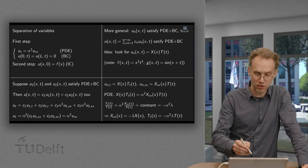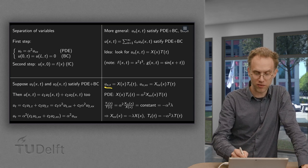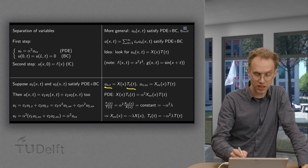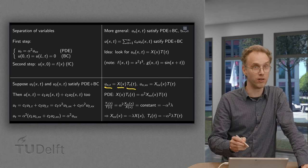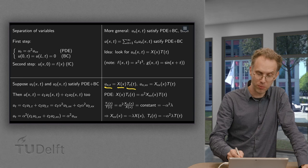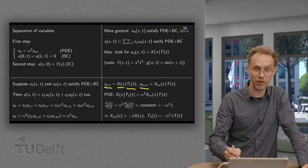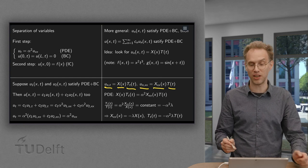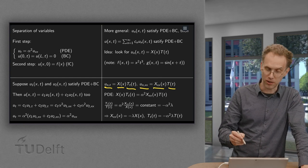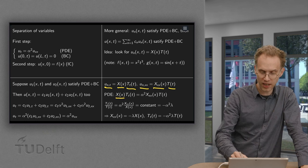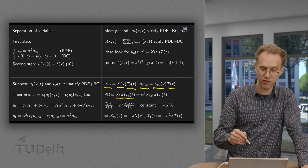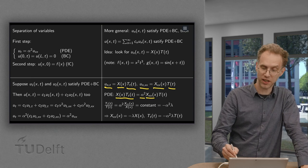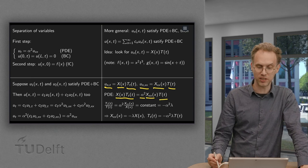Now if you have a solution of this form, then UN differentiated with respect to T, you only need to differentiate the second part because the first part only depends on X. And if you compute derivative with respect to X, you only have to differentiate the first part because the second part just depends on T and not on X. So you can plug that in the PDE. You get X times T differentiated with respect to T equals alpha squared times second derivative of X times T as a function of T.